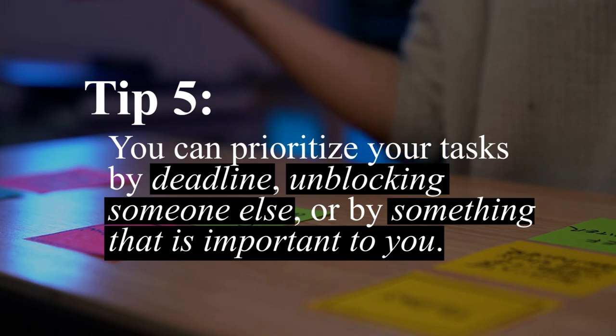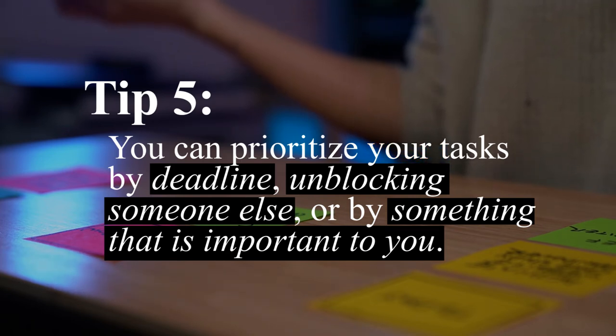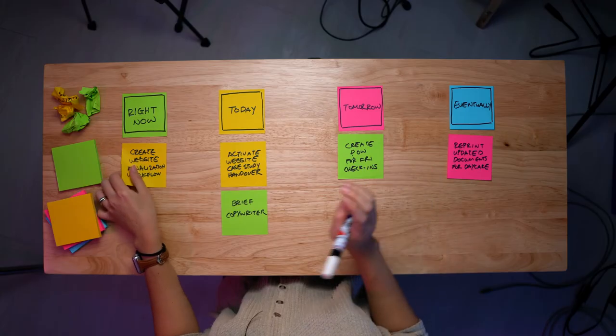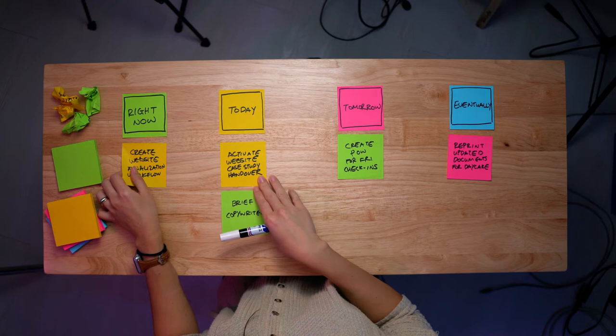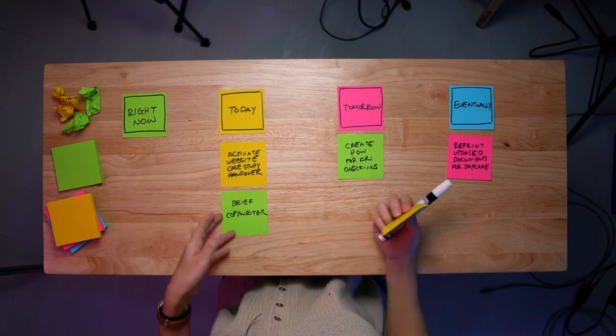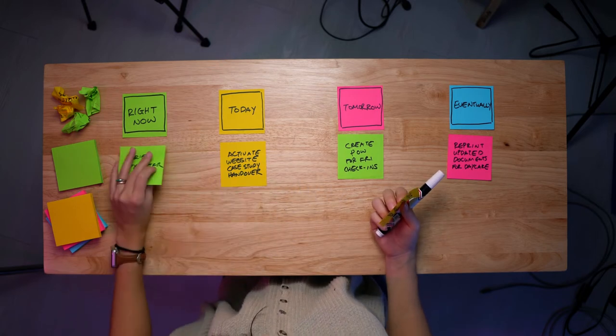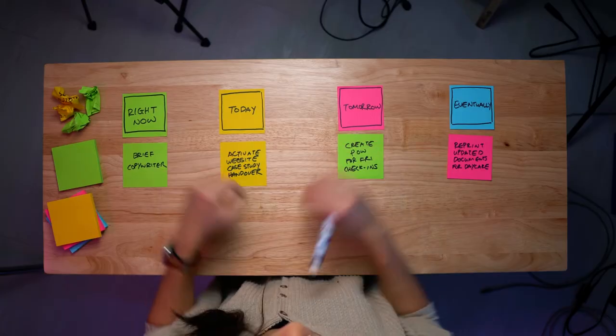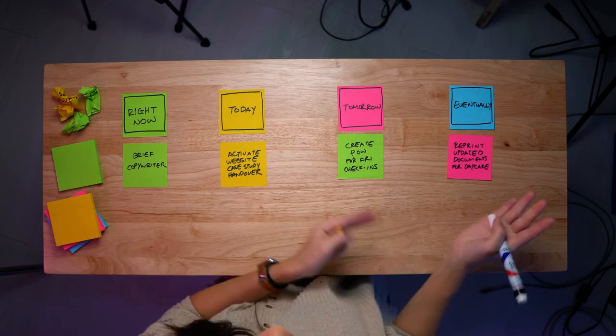Other than the obvious deadline, another way to prioritize tasks is to work on something that's going to unblock someone else — which is why I decided to do 'brief copywriter' before 'activate website case study handover' — or to work on something that's important to you even if it's not urgent. Another tip: you can color code your tasks. If you have different buckets like homework versus work versus personal chores, color coding can help you categorize and work through your task list better.